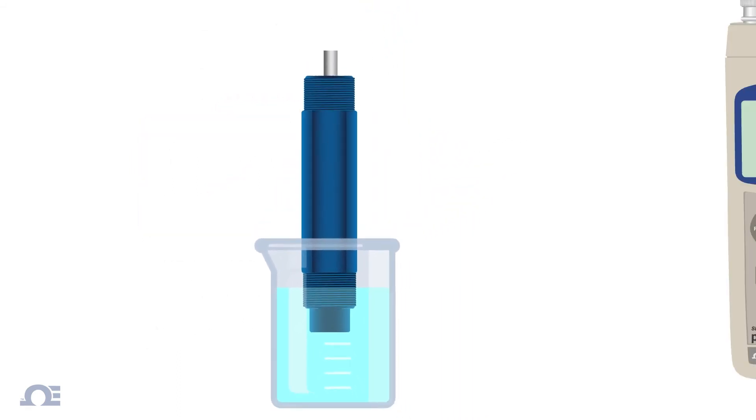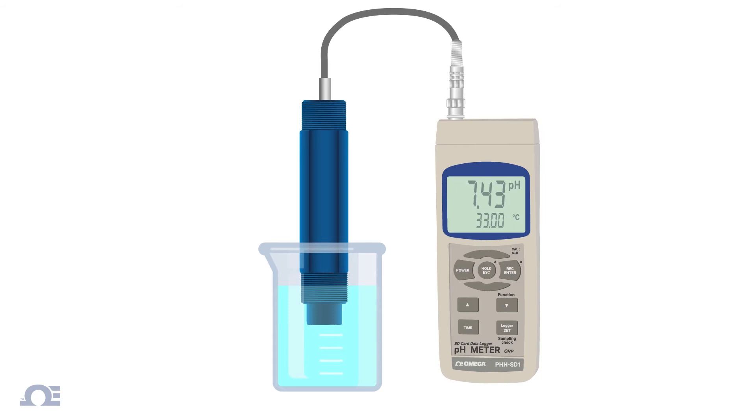The electrode is connected to a pH meter, which is basically a high-impedance amplifier that accurately measures the minute electrode voltages and displays the results directly in pH units on a digital display.